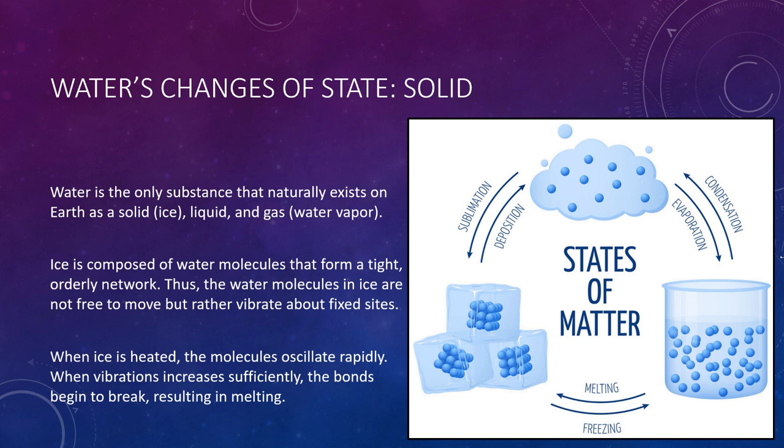Water is the only substance that naturally exists on Earth as a solid — such as ice — a liquid, and a gas, water vapor. Ice is composed of water molecules that form a tight, orderly network. Thus, water molecules in ice are not free to move, but rather vibrate about fixed sites. When ice is heated, the molecules oscillate more rapidly. When vibrations increase sufficiently, the bonds begin to break, resulting in the process of melting.